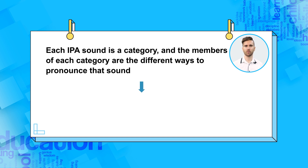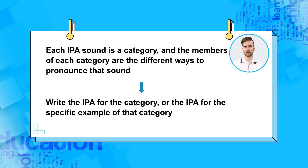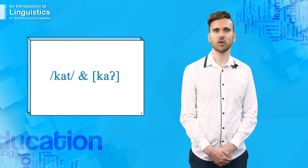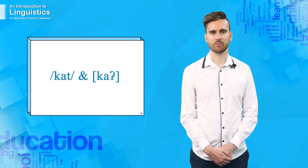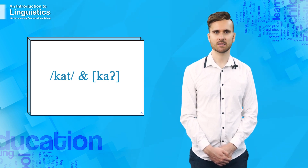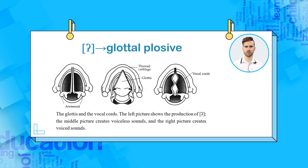When we transcribe the IPA for a sound, we either write the IPA for the category or the IPA for the specific example of that category. Let's explore a phonological example of this concept: the difference between 'cat' and 'cat' with a glottal plosive. The last sound of the second word is called the glottal plosive, which was introduced in the previous unit.